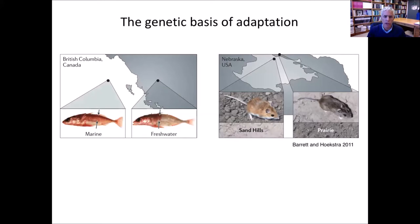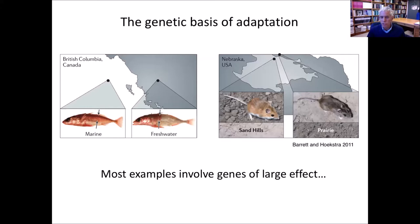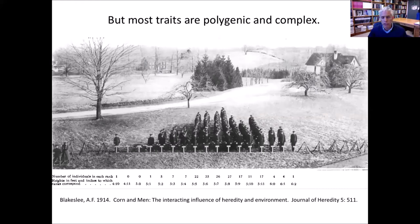It's worth saying at the outset that we actually have a lot of really good examples of the genetic basis of adaptation that I'm sure everyone is familiar with — things like armor plating in sticklebacks or color variation in pocket mice. But really all of these iconic examples involve genes of large effect. The traits are either Mendelian or sometimes oligogenic, but not truly polygenic. And of course, most traits are polygenic and complex, involving many genes, but also often heavily influenced by the environment — height in humans is a classic example.